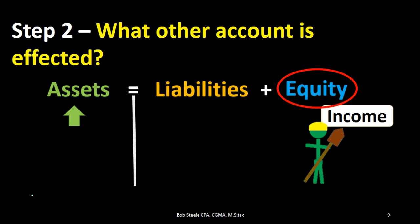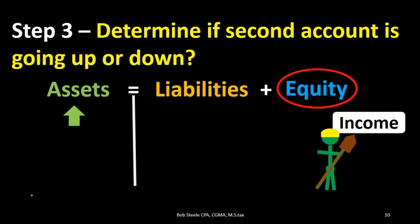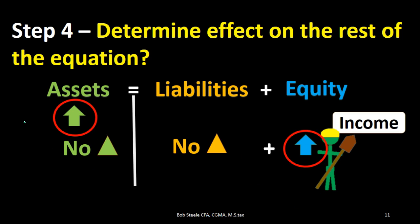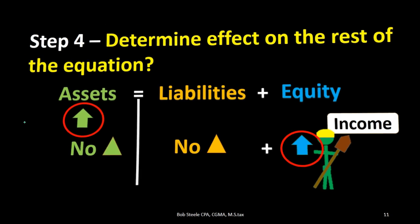With income being part of the equity section, we then have the next question: determine if the second account is going up or down. It might be a little confusing when we think about equity because income and expenses are included, as well as capital and draws, in the equity section. But if we know that assets went up, that tells us that the equity section went up. We want to say: does that make sense? Yes — income went up, which means the equity section as a total will go up as well. Are there any other accounts affected? Nothing to the other assets, nothing to liabilities. Assets went up, equity went up — the accounting equation remains in balance.